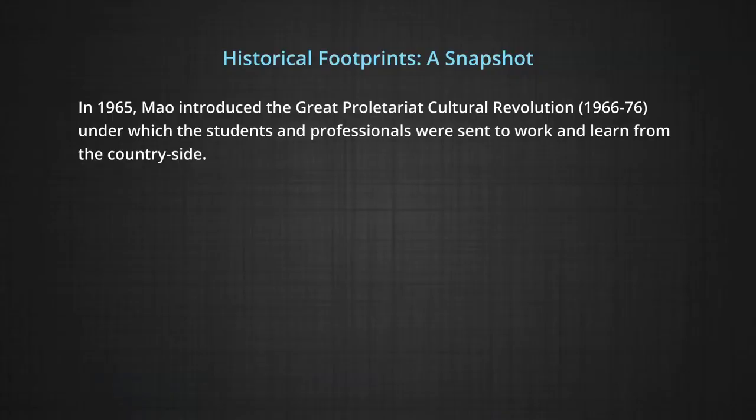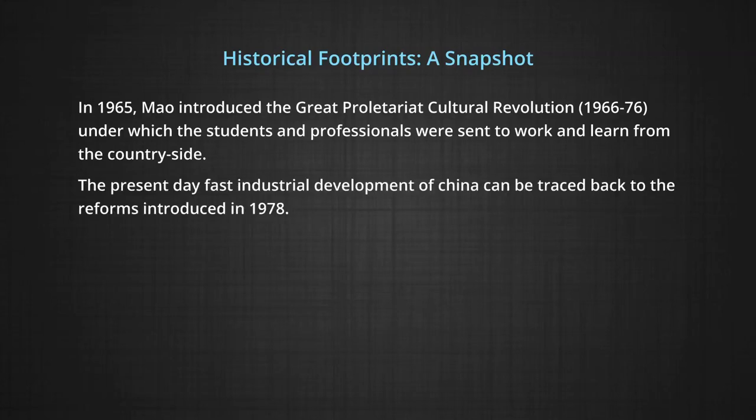The Great Leap Forward campaign met with many problems. A severe drought occurred, and Russia withdrew its professionals who had been sent to help the industrialization process. In 1965, Mao introduced the Great Proletarian Cultural Revolution, between 1966 to 1976, under which students and professionals were sent to work and learn from the countryside. The present-day fast industrial development of China can be traced back to the reforms introduced in 1978.